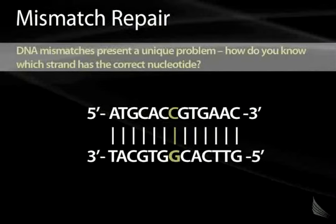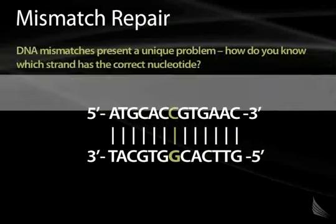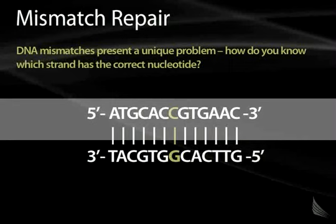DNA mismatches present a unique problem: how does the DNA repair mechanism understand which of the strands has the correct nucleotide? You can imagine, in a sequence with a mismatch where you have a C paired with a T, how does the repair mechanism know which of those two is actually the correct nucleotide that will encode the correct protein?